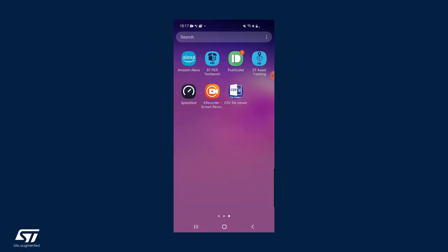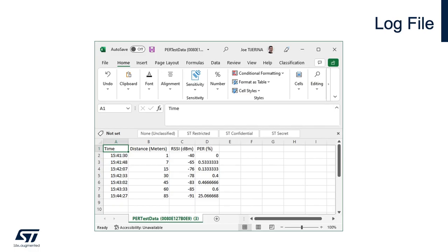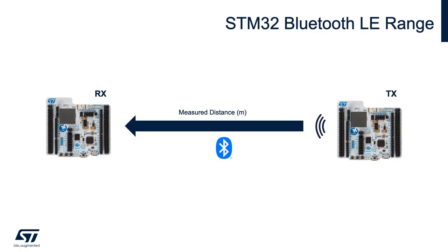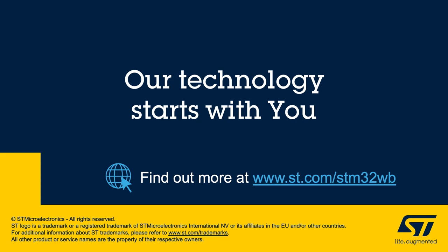Since I had been logging my data points, I can go into the phone's file system under the internal storage documents folder and find the CSV log file with the summary of the recorded measurements, which should look something like this. Remember that the PER test bench utility can be easily tailored to run on any custom PCB board to measure the performance of your RF front-end implementation, as the firmware source code is made available from the GitHub repo mentioned earlier. I hope you found this overview useful, and for more information, please visit ST.com/STM32WB. Thanks for watching.